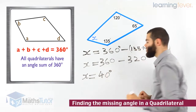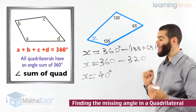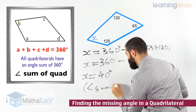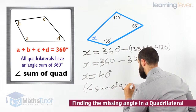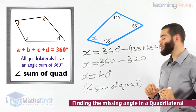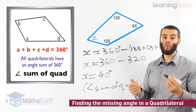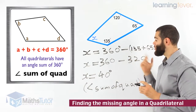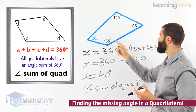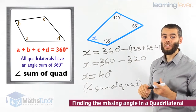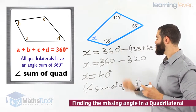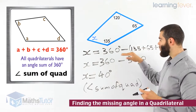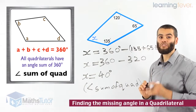X is going to be 360 take away 320. X is 40 degrees. Now we write our reason: angle sum of a quadrilateral — that's the rule we used. This is how we justify our answer. X is 40. How did we find that? We used the angle sum of a quadrilateral formula, which tells us that all the angles add up to 360. Take away the three known angles and we're left with the last one: 360 take away 320, X is 40 degrees. Our working out and our reason are both there.